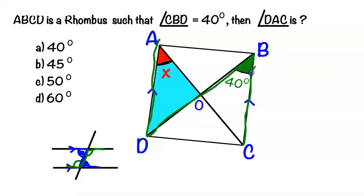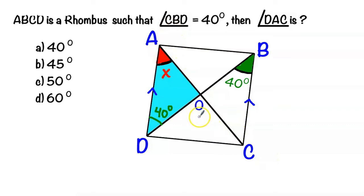So this angle DBC is equal to this angle, so this one is equal to 40 degrees. Another important property of a rhombus is that diagonals are perpendicular, so we have here a 90 degree angle.